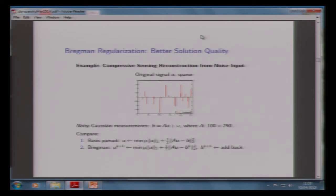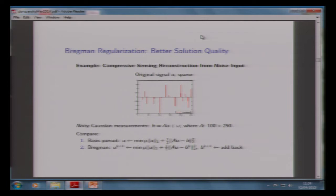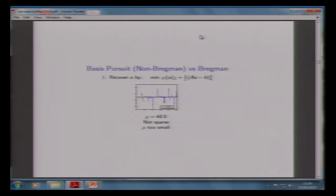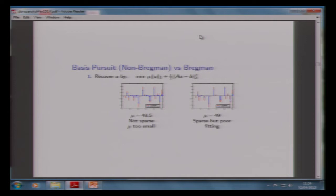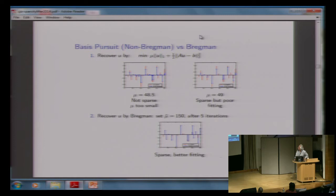For compressive sensing from noisy input, you are solving the unconstrained problem: minimizing mu times the L1 norm plus the error squared. Bregman takes the sequence of those minimizers. There's the original sparse signal — a bunch of spikes in 1D. If you try to solve it with too little mu, you get back stuff which doesn't look great. If you make mu a little better, it's sparse but there's poor fitting. However, the spikes are in the right place. But if you do Bregman, after a few iterations, you're right on the money.